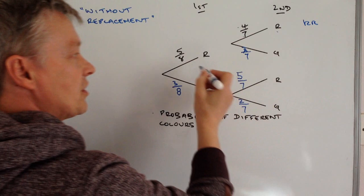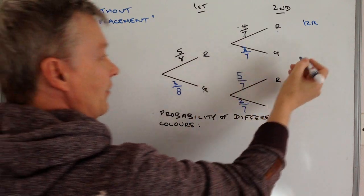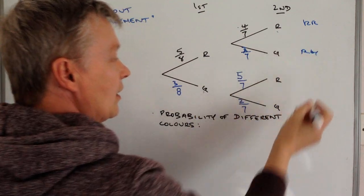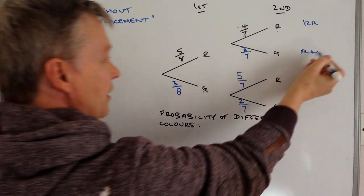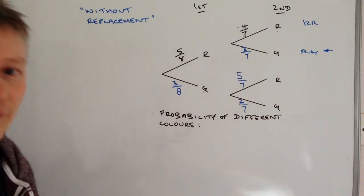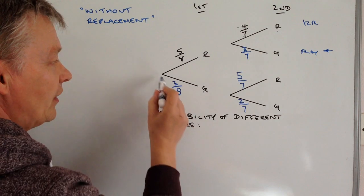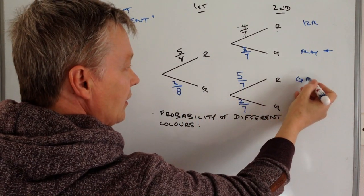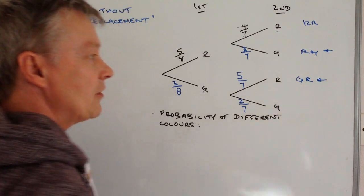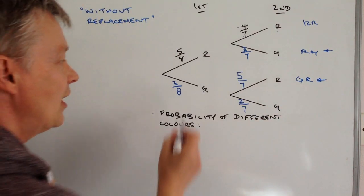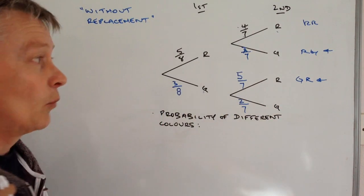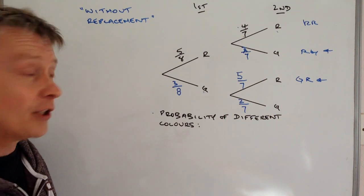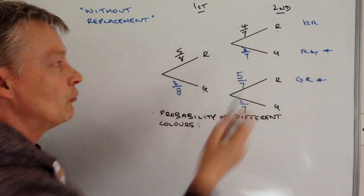Okay, the second outcome is red and then he picks a green, which is kind of what we're interested in, this one here, because of the probability of different colours. So the third time is green red, so green red, we're interested in those two because they're different colours, and then green green we're not interested in. So let's have a look at the probability of him taking red green.